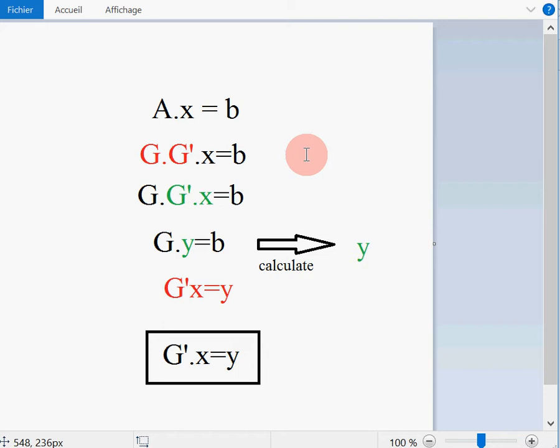into G and G prime. After that, you are going to solve and calculate Y, which is G prime multiplied by X. In the end, we can solve for X.